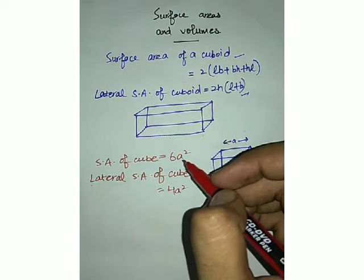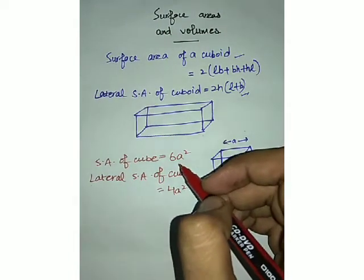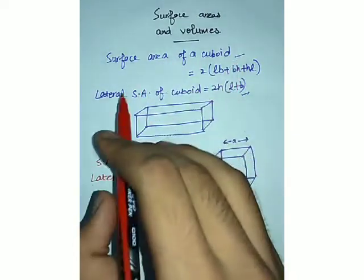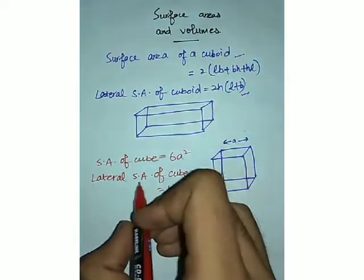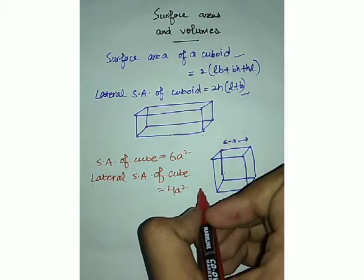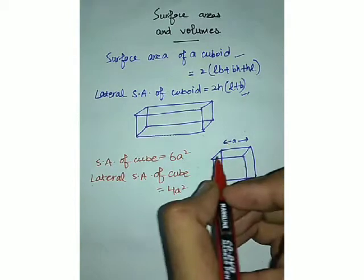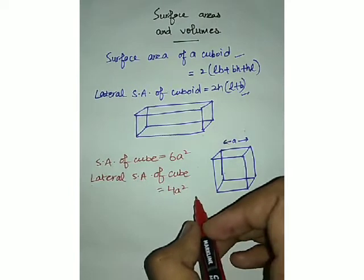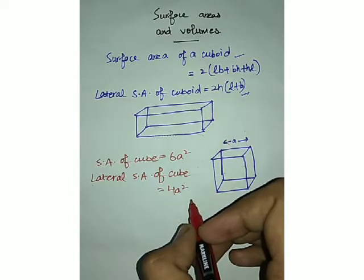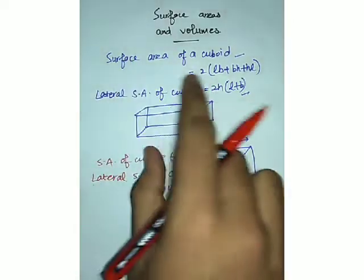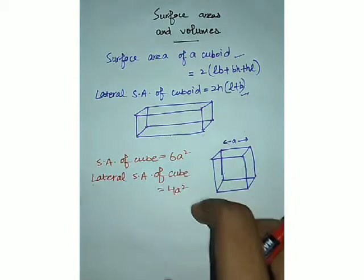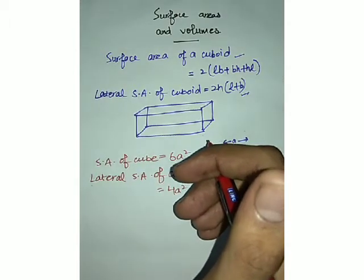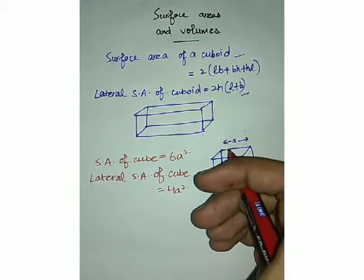To solve problems involving surface areas of cube and cuboid, you have to remember these four formulas: surface area of a cuboid, lateral surface area of cuboid, surface area of cube, and lateral surface area of cube. One extra note: the surface area of a cube or cuboid is also sometimes called the total surface area, so don't get confused if you see 'total surface area' in a statement — it means the surface area itself.